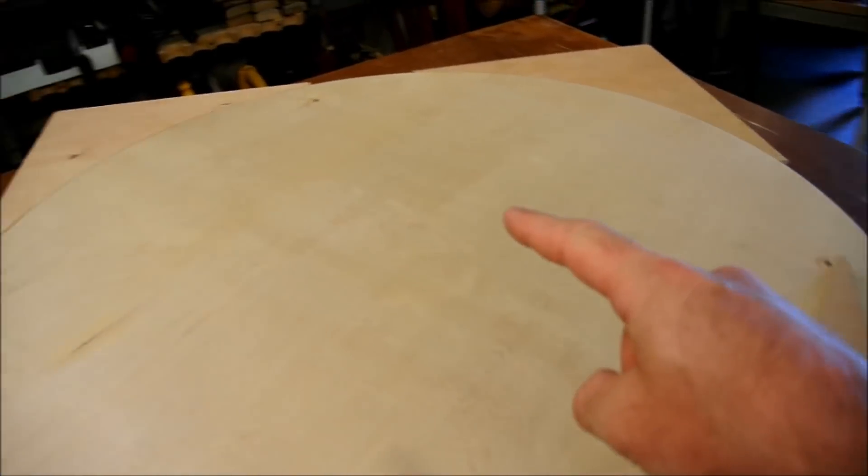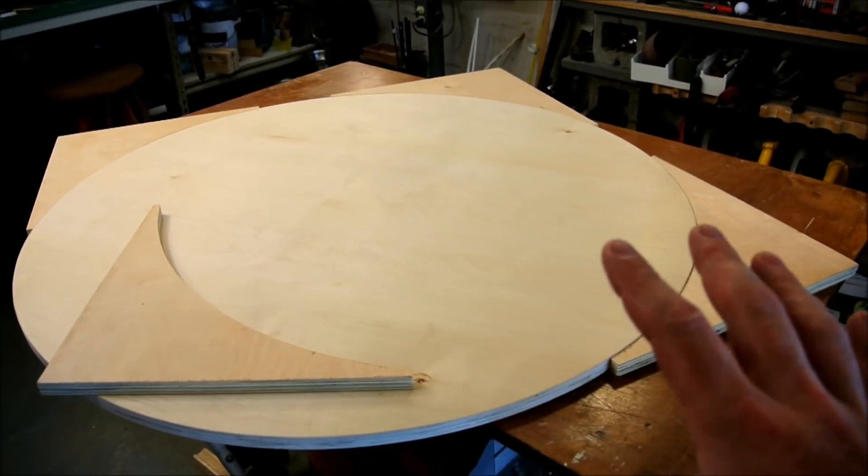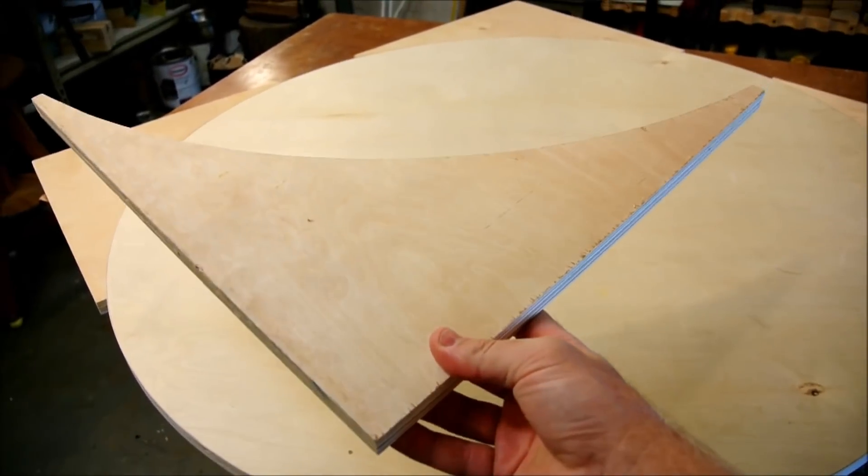Okay, so you have a circle inscribed in a square. And when you cut it out, you get these four corners, these four identical pieces.